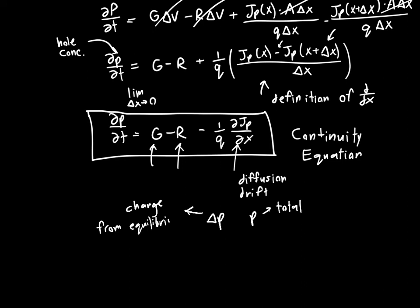At equilibrium things aren't terribly interesting — everything is static, there's no net movement, so the continuity equation is just zero equals zero. Changing everything in terms of delta p will allow us to make certain simplifications. When delta p is much less than the equilibrium hole concentration, or much greater than it, the equation reduces to something often solvable when it otherwise wouldn't be. Thanks for watching and I'll see you in the next one.